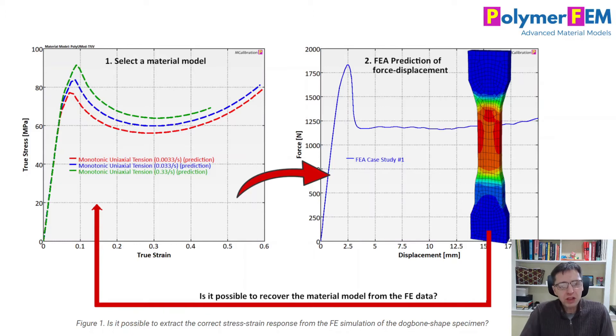The purpose of not using DIC data here, but instead using a finite element result, is that I already know exactly what the material model is. So I can compare the results I get from different extraction procedures to what the true material model is. That's what I want to do here today.